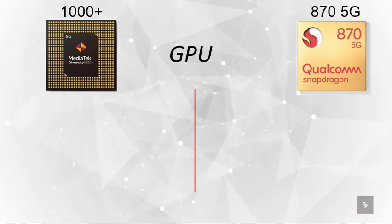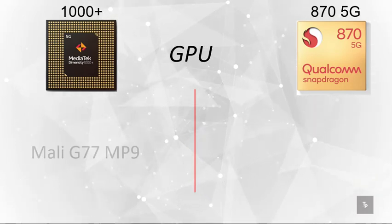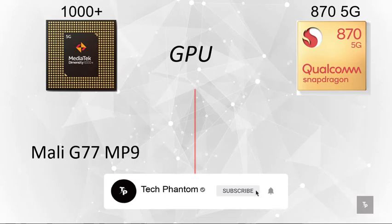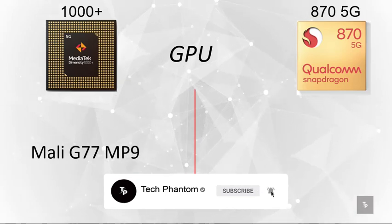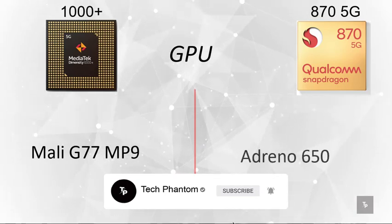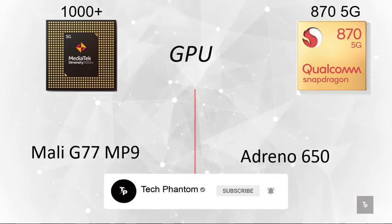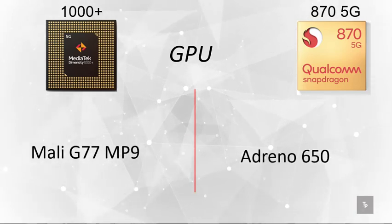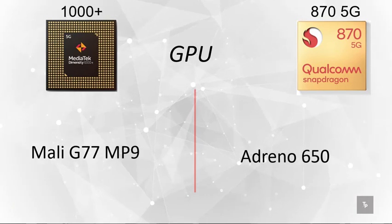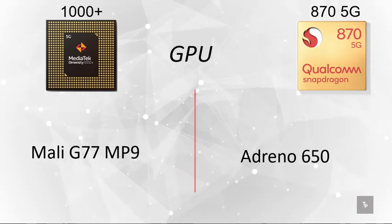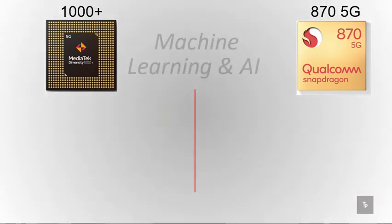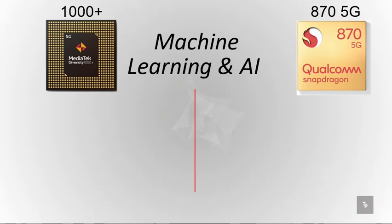For GPU rendering, the MediaTek Dimensity 1000 Plus comes with the Mali-G77 MP9, while the Snapdragon 870 offers the Adreno 650.